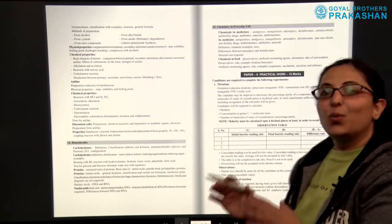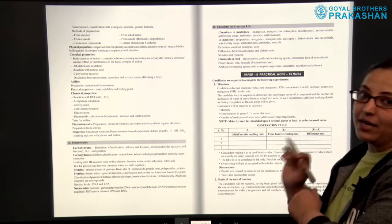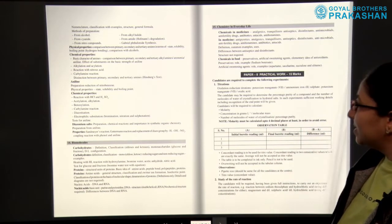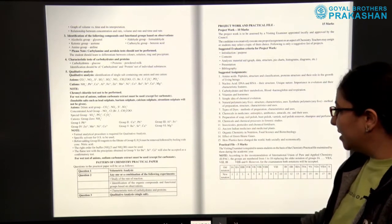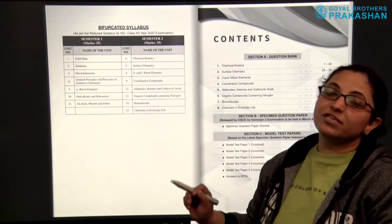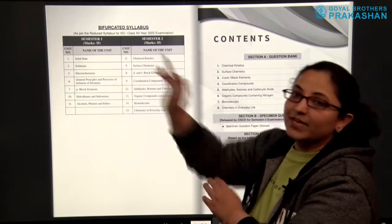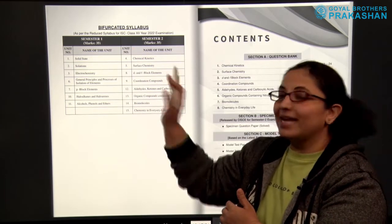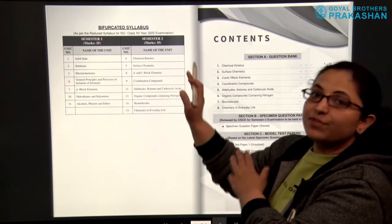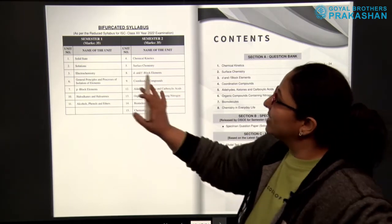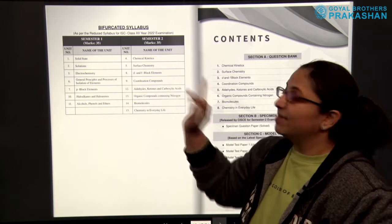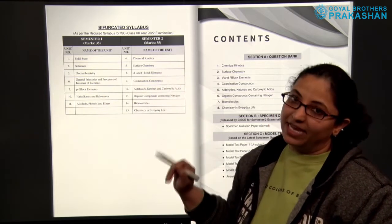After this we have the syllabus for practical work, Paper 2, which is for 15 marks. After the reduced syllabus, we have the bifurcated syllabus for semester 1 and semester 2. Both semesters are for 35 marks each. You can see the units are provided here for semester 1 and semester 2 — the syllabus is bifurcated.